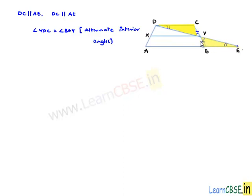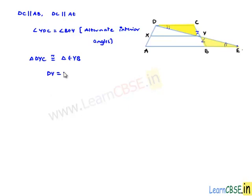In these two triangles we have two angles and a side correspondingly equal. Therefore triangle DYC is congruent to triangle EYB by the AAS criterion. When two triangles are congruent, the corresponding sides are equal. Therefore DY is equal to YE — let this be equation number one — and DC is equal to BE — let this be equation number two.